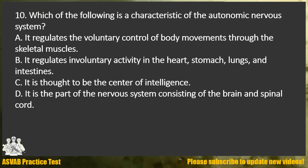Question 10. Which of the following is a characteristic of the autonomic nervous system? A. It regulates the voluntary control of body movements through the skeletal muscles. B. It regulates involuntary activity in the heart, stomach, lungs, and intestines. C. It is thought to be the center of intelligence. D. It is the part of the nervous system consisting of the brain and spinal cord.